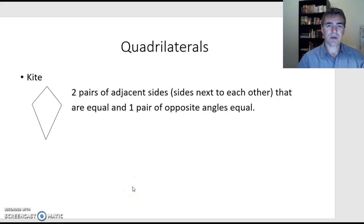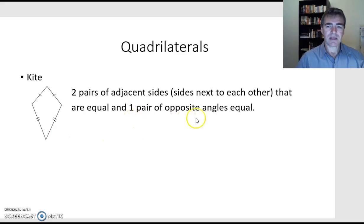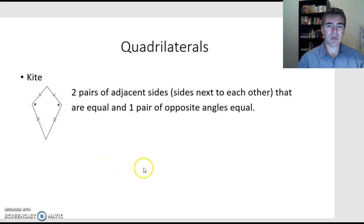First of all, a kite. It has two pairs of adjacent sides that are equal — adjacent means next to, so these are the sides next to each other. It also has one pair of opposite angles that are equal. Looking at the shape, it ends up being these two angles here that are opposite and equal. That's not the only thing we need to know about a kite, but it could be quite useful.